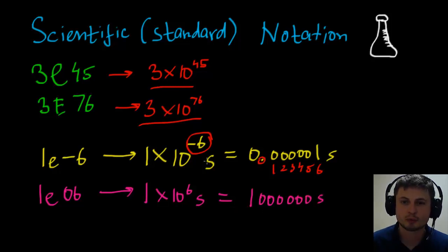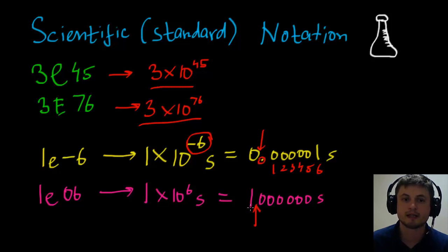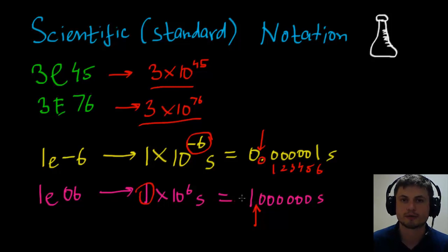Whenever you're dealing with negative powers, count from the decimal point. Whenever you're dealing with positive numbers, count from the space between your initial number and the zeros. Let's try another example to make it a little bit clearer.